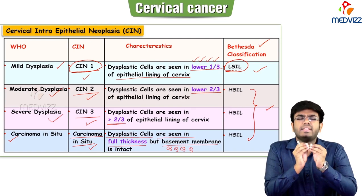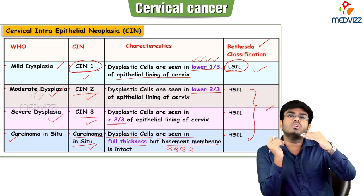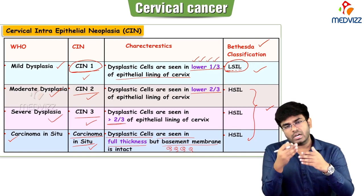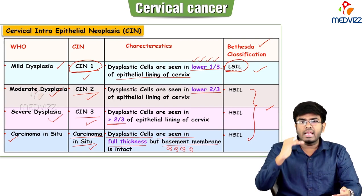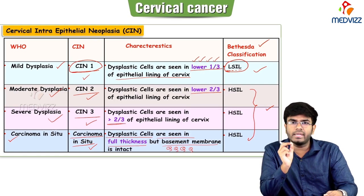In CIN1, it's a very mild dysplasia — only the lower one-third of the cervical lining is affected. In CIN2, moderate dysplasia — two-thirds of the cervical lining is affected. In CIN3, more than two-thirds is affected. In carcinoma in situ, the total length of the cervical lining is affected with dysplastic changes, but the basement membrane is still intact. There is no breach in the basement membrane.